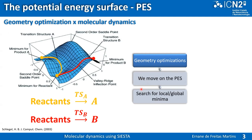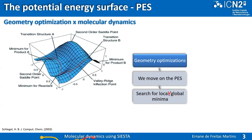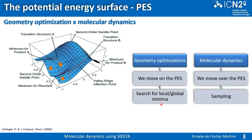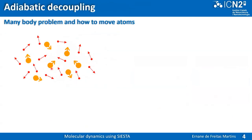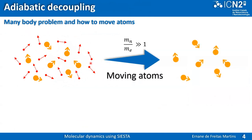In geometry optimization, you move on the potential energy surface following certain paths, searching for local or global minima. The difference with molecular dynamics is that in MD you visit several points in the potential energy surface, aiming to visit as many points as possible — you move over the surface and do sampling. That's what molecular dynamics is for.